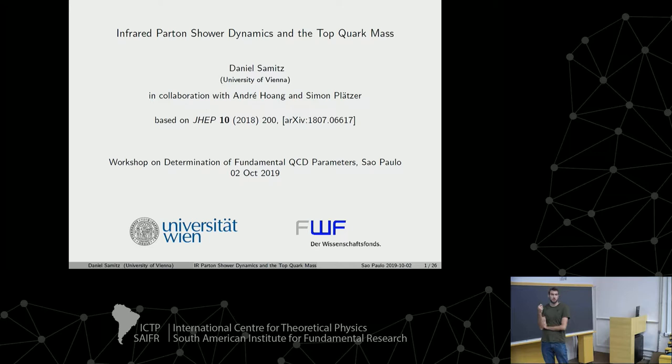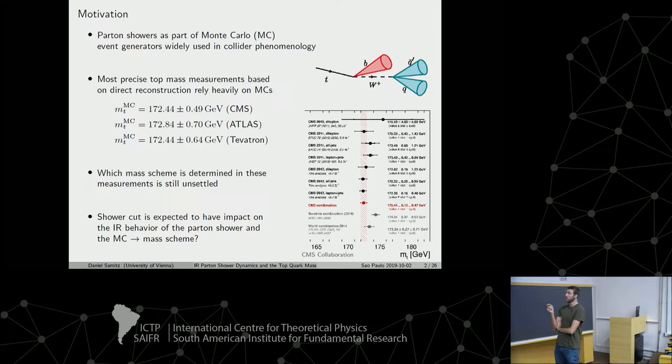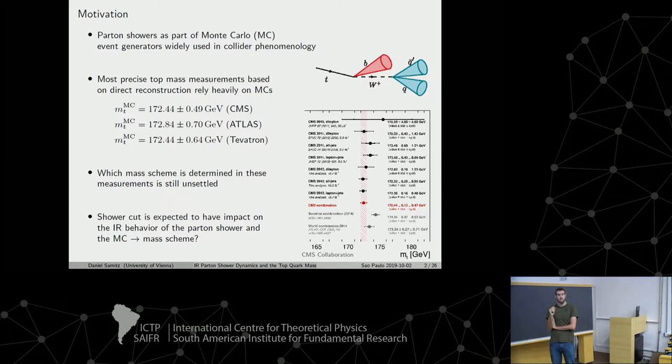Parton showers are an essential part of every Monte Carlo event generator, and Monte Carlo event generators are essential for basically almost all phenomenological studies at hadron colliders. The parton shower simulates the consecutive branching and splitting of quarks and gluons at a perturbative scale, terminated at some low infrared scale called the shower cutoff, where the partonic event is handed over to the hadronization model.